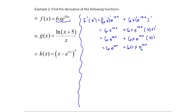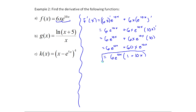Notice how much more complicated the derivative is compared to the original function. This could be written nicer — there's a factor of 6e^(10x) in each term. Factoring out 6e^(10x) leaves 1 + 10x inside the parentheses. You can verify: 6e^(10x)·1 gives the first term, and 6e^(10x)·10x gives 60xe^(10x). So 6e^(10x)(1 + 10x) is a nicer final answer. This was an example of the product rule, with the chain rule applied within it.